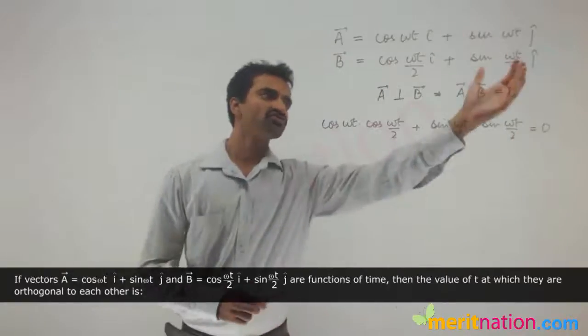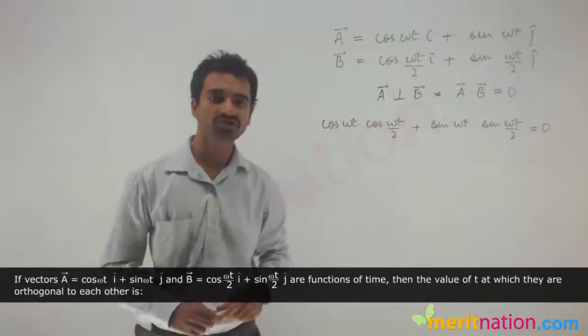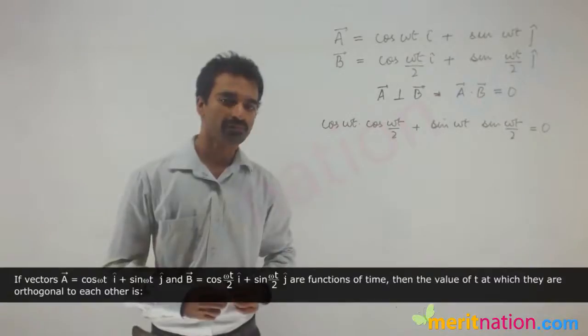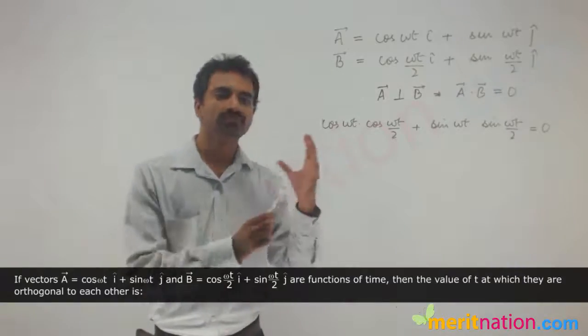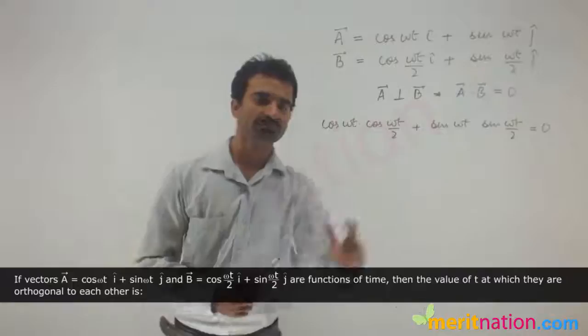Why? Because i dot j and j dot i are also 0 because they are also perpendicular to each other. Therefore the only components I get is i dot i and j dot j.